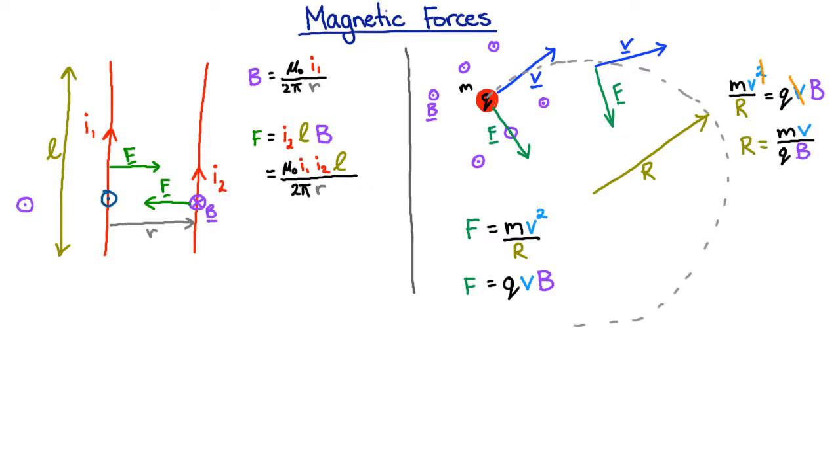So the stronger the magnetic field, the tighter the circle you can swing it around, and the faster it's going, the bigger the circle will be. So that all makes sense.